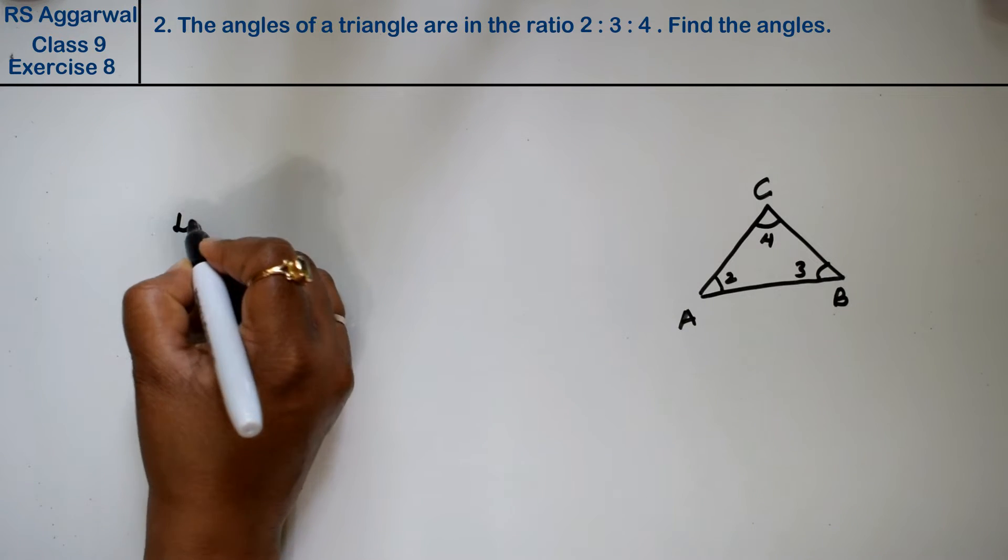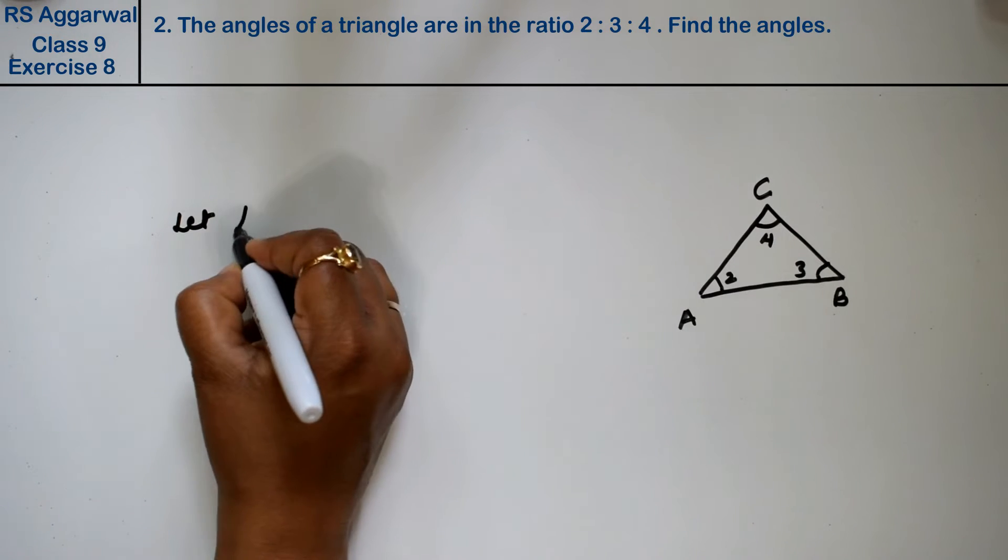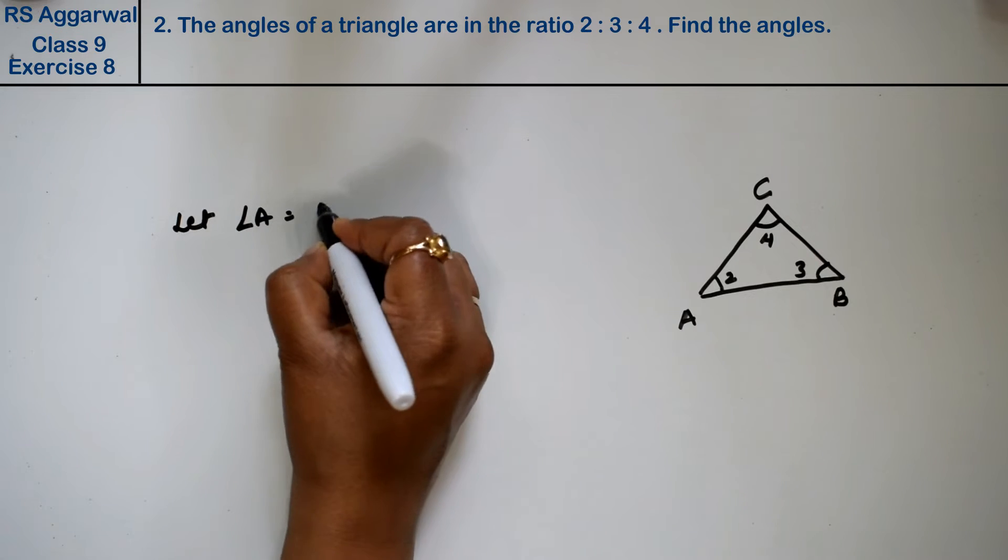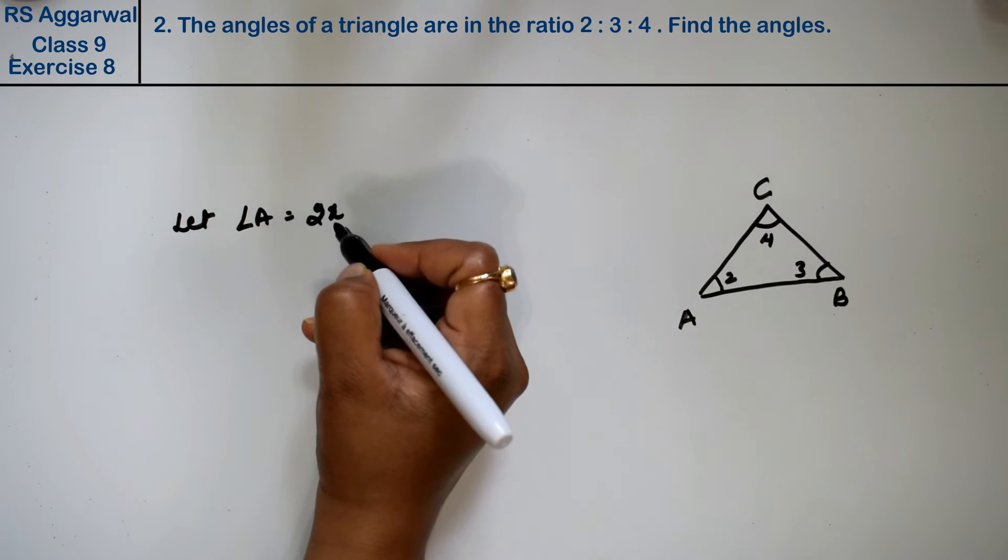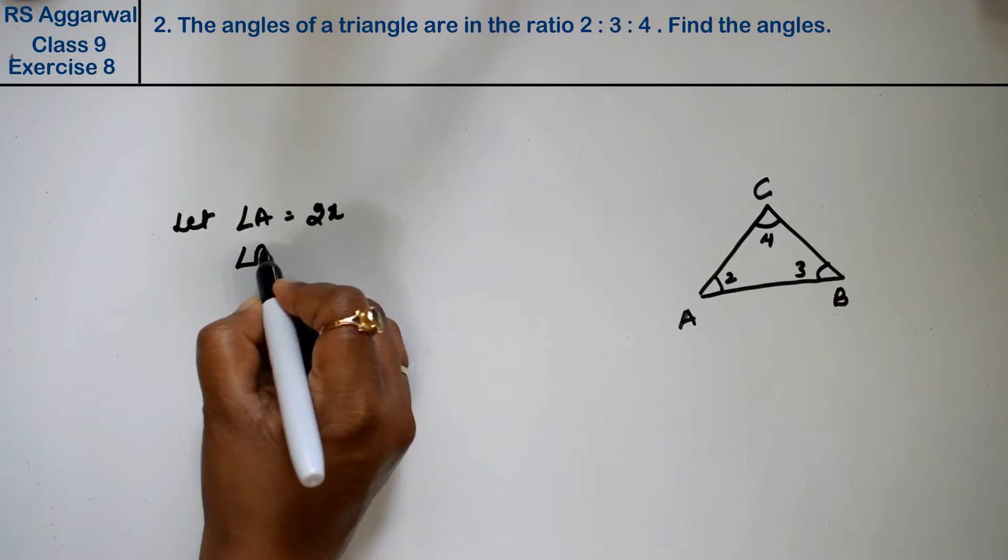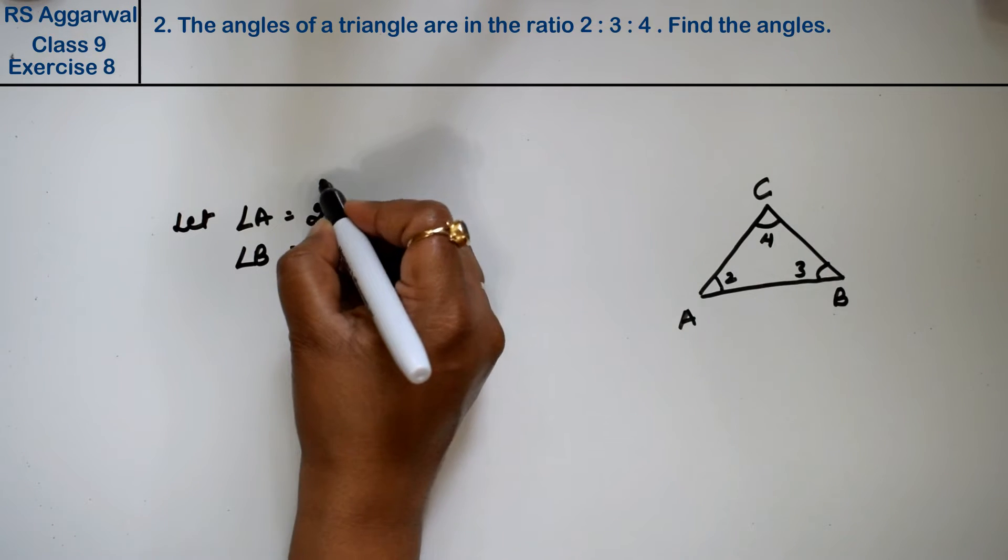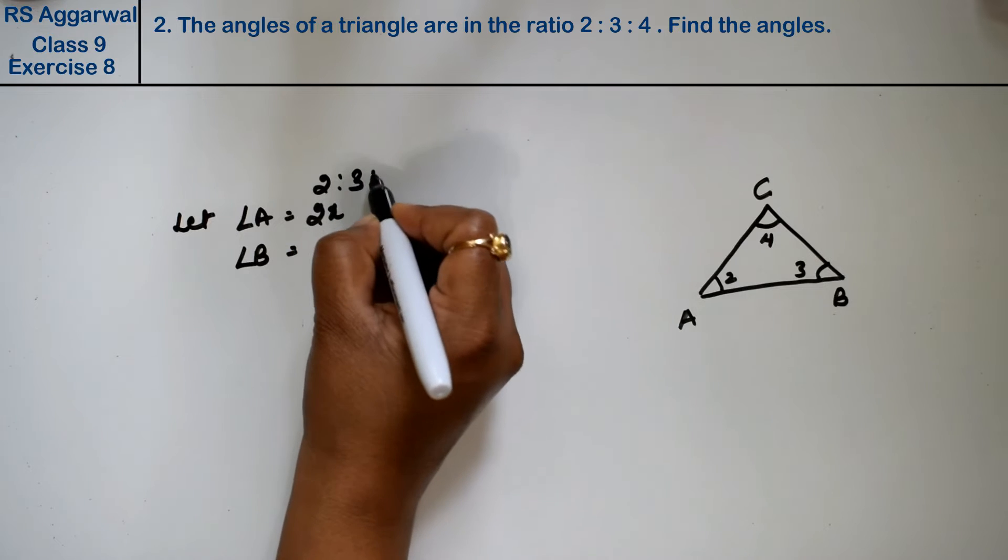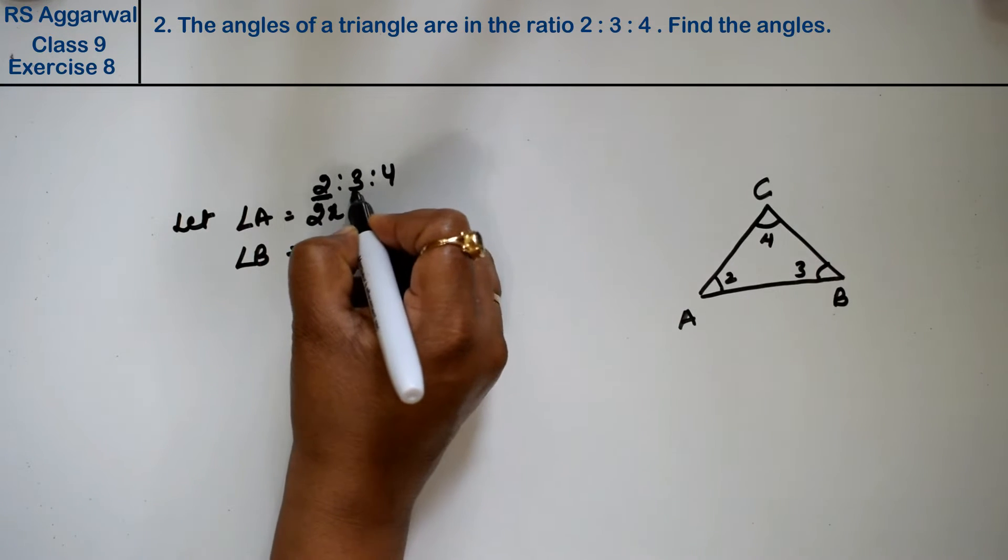Let angle A equal 2x. Since the ratio is 2:3:4, we let angle A = 2x, angle B = 3x, and angle C = 4x.